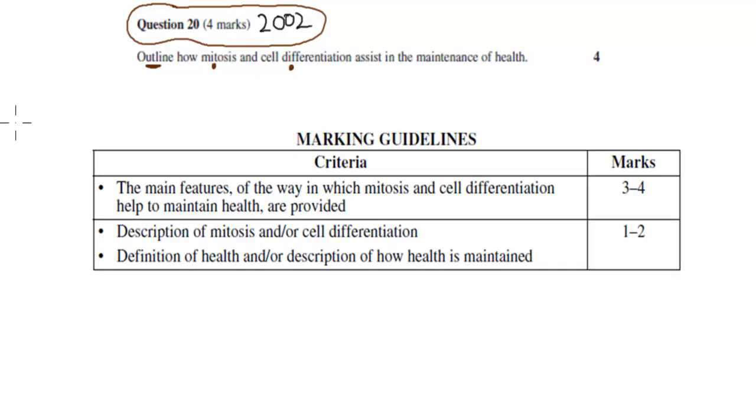And the marking guidelines say to get 4 full marks, you should provide the main features, because outline means the main features, of the ways in which mitosis and cell differentiation help to maintain health. It would be good to mention basically anything that you know about mitosis and cell differentiation that answers that question.